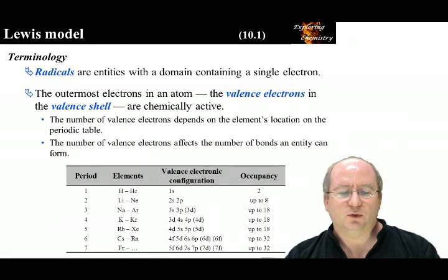However, the octet rule only applies to three elements on the periodic table: carbon, oxygen, and fluorine. For every other element on the periodic table, stable entities can be produced with more or fewer electrons.